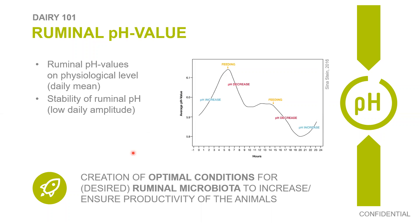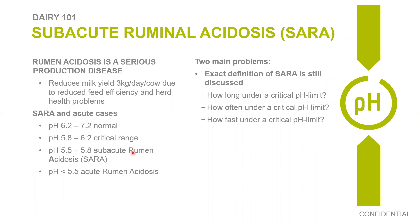Creating optimal conditions is crucial for the ruminal microbiotics to increase the productivity of the animals. On the question of how the sensor is recharged: it's battery-driven and not recharged. We make many improvements on the sensor side to use as little power as possible — for example, sending data only every hour — and we put a lot of effort into being able to keep one sensor alive for a cow's lifetime.